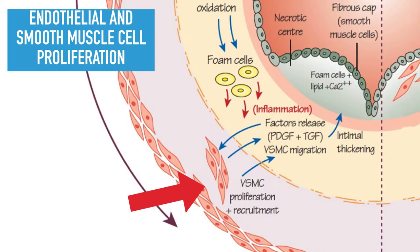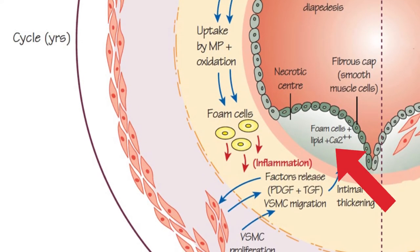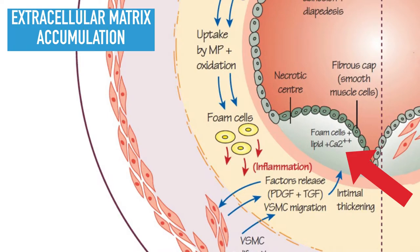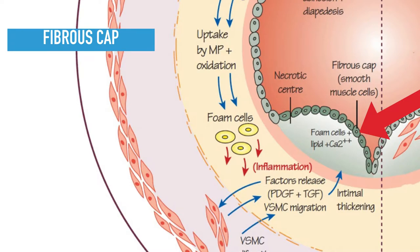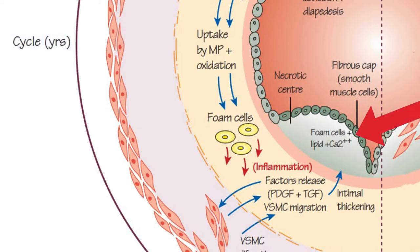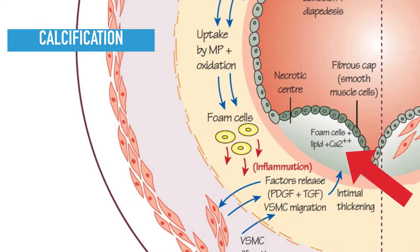Over time there is a proliferation and accumulation of both endothelial cells and smooth muscle cells. This proliferation results in extracellular matrix production and extracellular matrix accumulation. A fibrous cap forms, and eventually calcification of the plaque and arterial wall takes place.